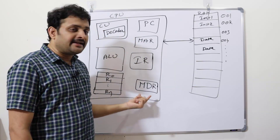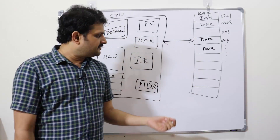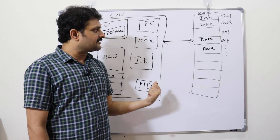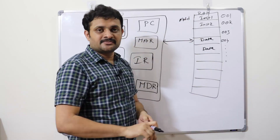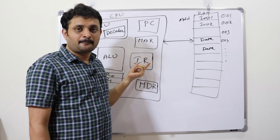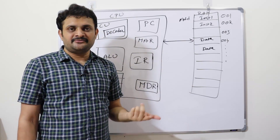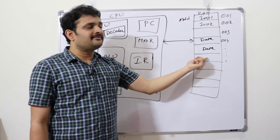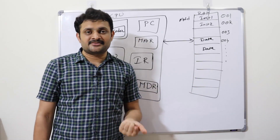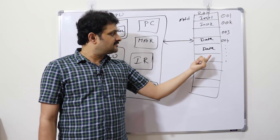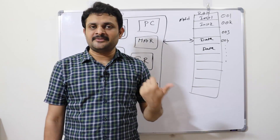There is another register called MDR — Memory Data Register, also called the memory buffer register. Whenever an instruction is ready and we need to fetch data for performing a calculation — for example, an ADD instruction — the ALU needs the data. The data is available in RAM again, so MDR is used to fetch that data from RAM and send it to the ALU for performing arithmetic or logical operations.